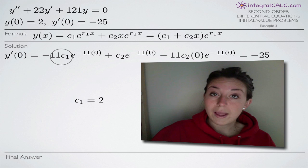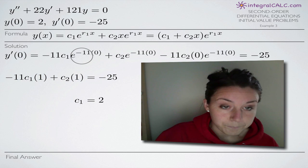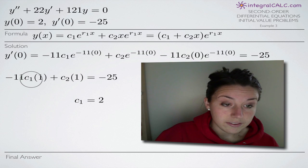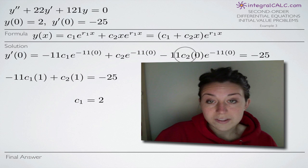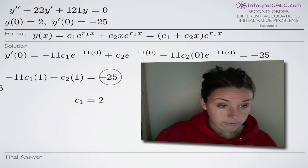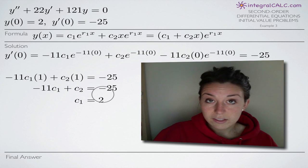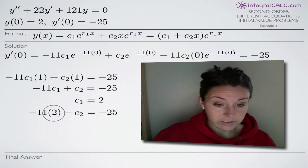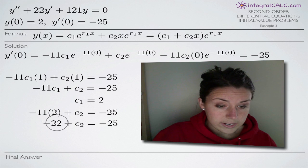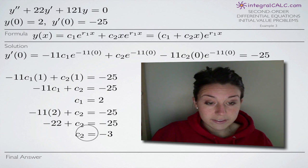For y'(x), we plug in 0 for x and set it equal to −25. Simplifying with e^0 = 1, we get −11c₁ · 1 + c₂ · 1, and the third term disappears because it's multiplied by 0, giving −11c₁ + c₂ = −25. Since we found c₁ = 2, we substitute: −11(2) + c₂ = −25, which gives −22 + c₂ = −25. Adding 22 to both sides: c₂ = −3.